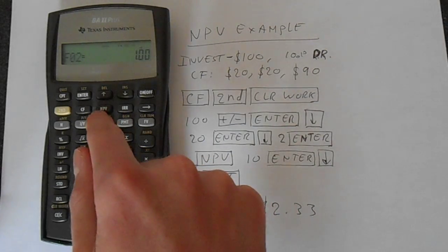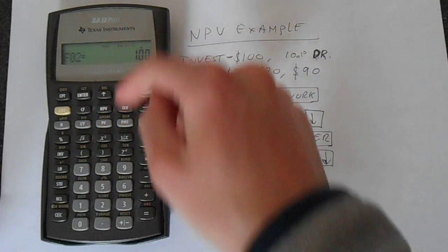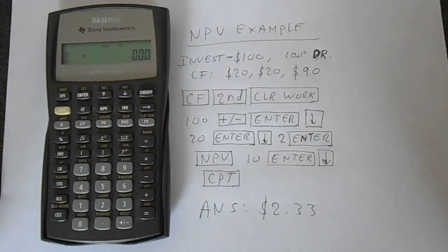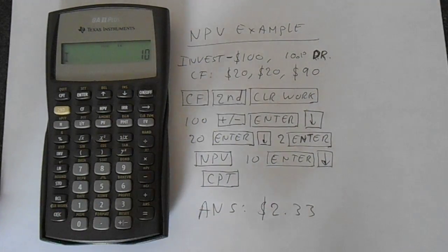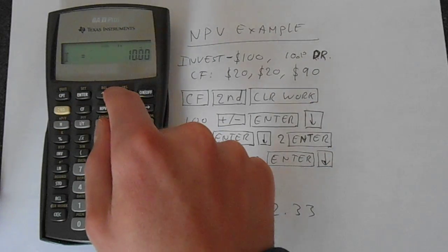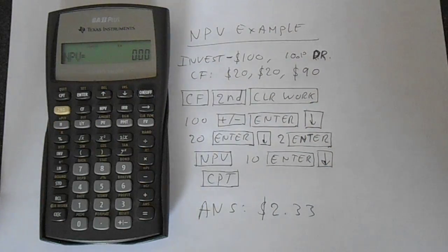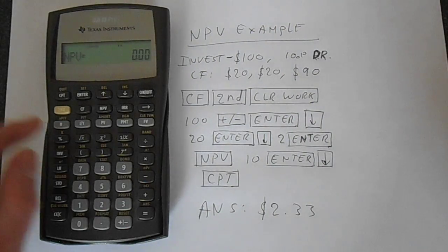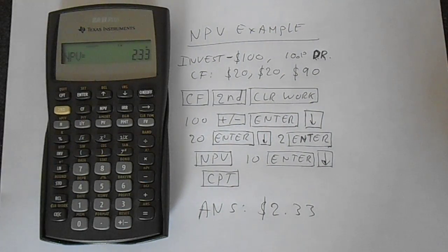We just press this NPV button on the second row down, and that asks us for an interest rate I, which is going to be 10. Then we press enter, and if we go down, it's got net present value equals. If we press this CPT button, we get $2.33—that's computed it, and that is the correct answer.